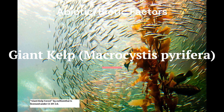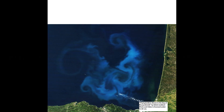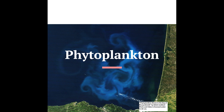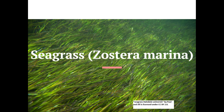Now we will talk about abiotic and biotic factors, beginning with the dominant plants. Three examples are giant kelp, phytoplankton, and seagrass. Giant kelp has a gas-filled bladder that provides buoyancy, allowing it to grow towards the ocean surface. Phytoplankton's adaptation is the ability to photosynthesize and float near the water surface to capture sunlight — shown here as a phytoplankton bloom. Seagrass has long ribbon-like leaves for photosynthesis and root-like structures for anchoring in the sediment.